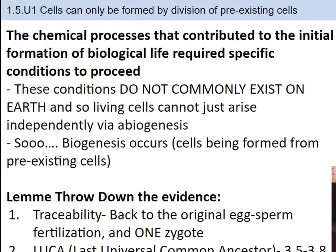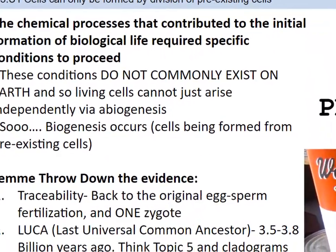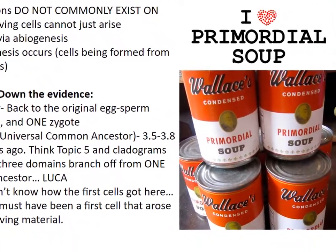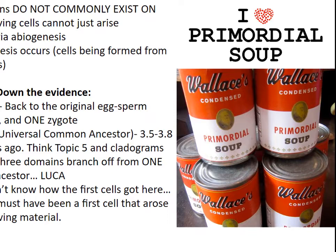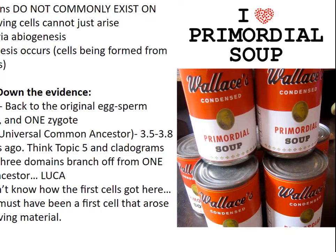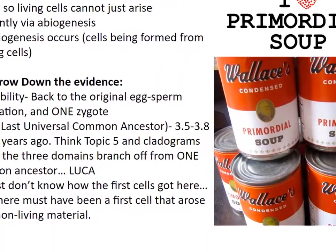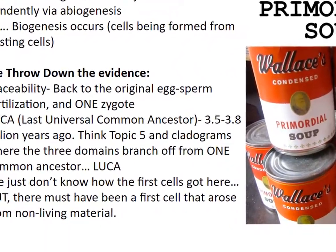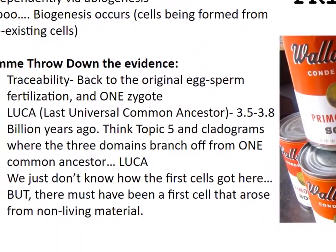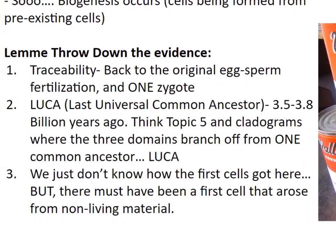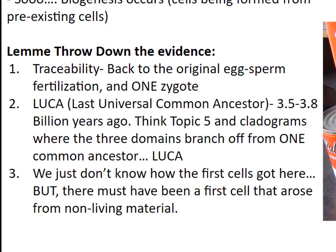Biogenesis occurs, which is cells being formed from pre-existing cells. Robert Virchow proposed this in his research. Humans have observed cells coming from other cells through binary fission, mitosis, and meiosis, but never have we observed spontaneous generation on Earth. The evidence we have is that spontaneous generation does not occur on Earth in its current state. So biogenesis means that life is formed by the division of pre-existing cells. Let's drop some evidence and talk about how we know about life on Earth today.